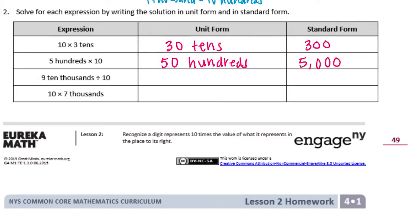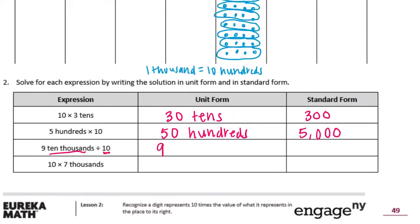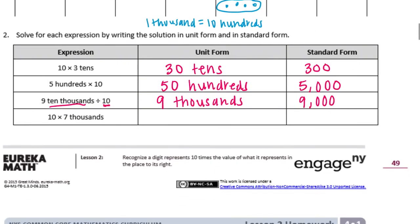Nine ten-thousands divided by ten: if we take ten thousands and divide by ten, we're moving one place on our place value chart to thousands. So that would be equal to nine thousands, or nine thousand. And ten times seven thousand is seventy thousands, or seventy thousand.